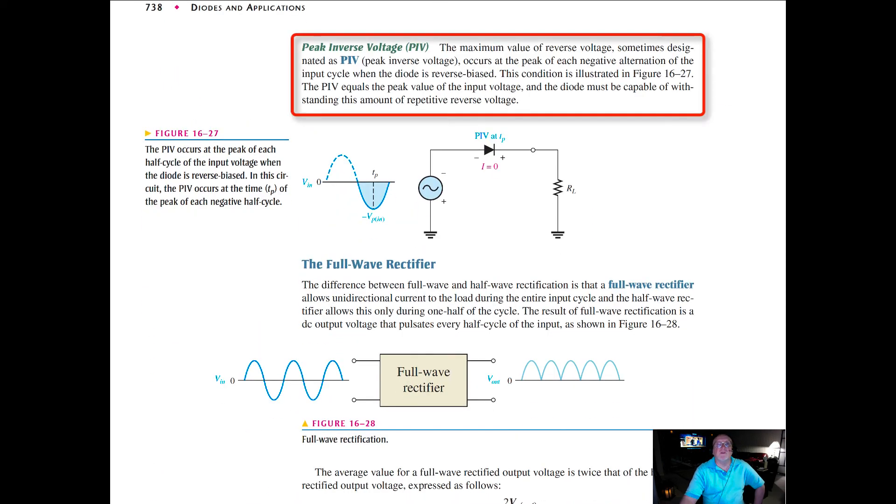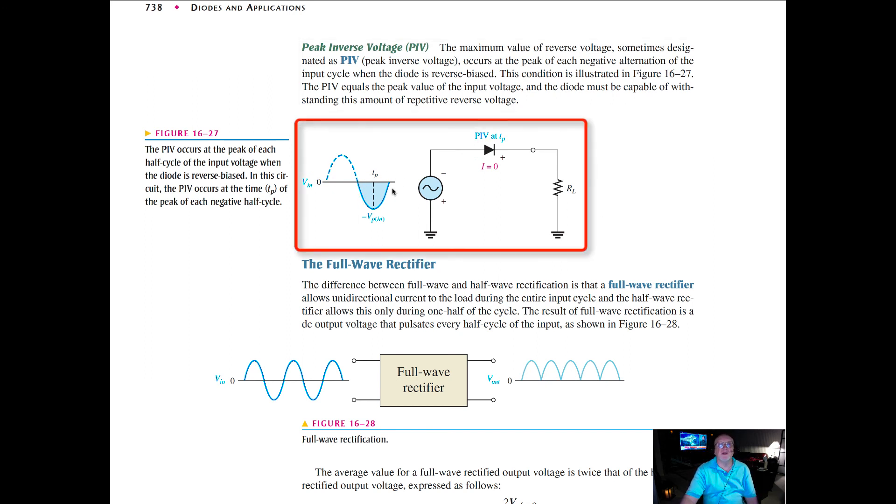The peak inverse voltage, or the PIV, is the maximum value of the reverse voltage sometimes designated as peak inverse voltage. It occurs at the peak of each negative alternation of the input cycle when the diode is in reverse bias. The peak inverse voltage equals the peak value of the input voltage, and the diode must be capable of withstanding this amount of repetitive reverse voltage. Too much negative voltage, too much reverse bias can damage the diode.